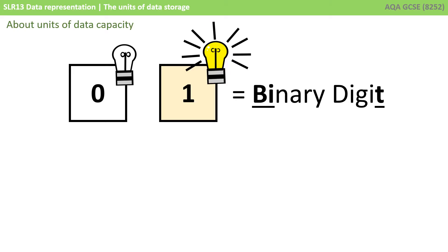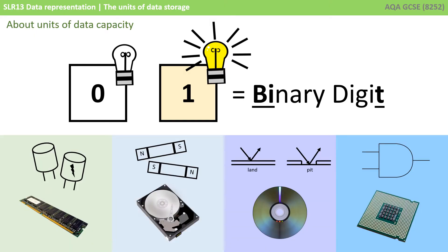We already understand that everything stored in a computer system is stored in binary — those 0s and 1s that represent just two states. For example, capacitors that store a charge or don't store a charge in RAM to represent a 1 or a 0, magnetic north and south poles in hard drives, pits and lands on Blu-ray discs, and current or no current with logic gates. This is because it's much easier, and therefore cheaper, to manufacture electronic component units with just these two states.